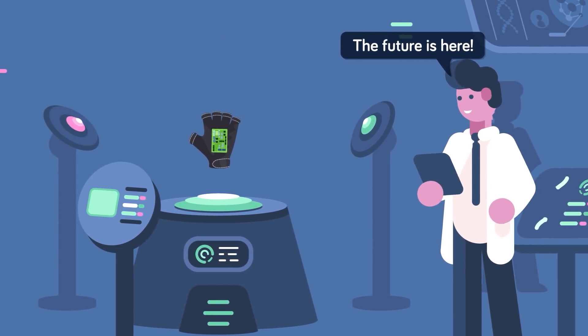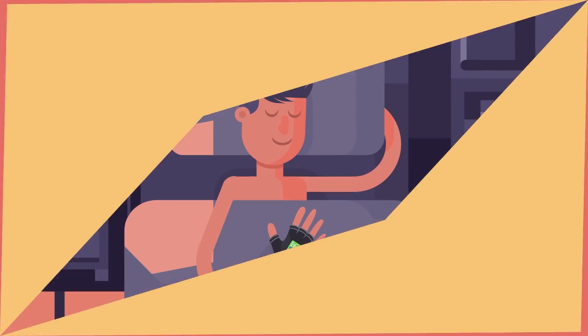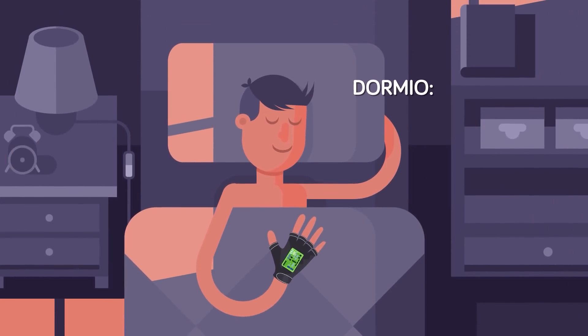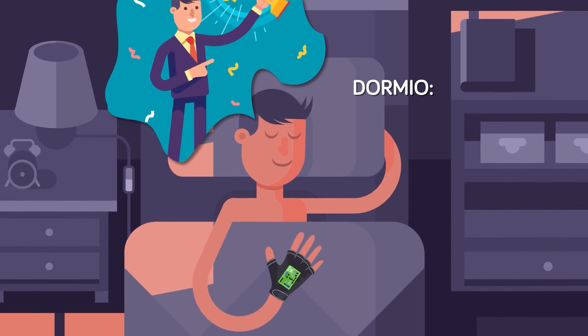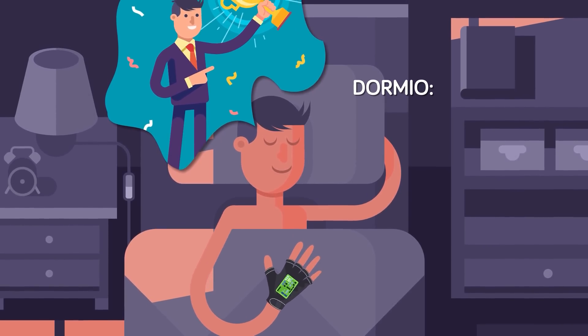And that dream salvation might come in the form of a glove. The device is called Dormio, and it looks a little like the notorious failed Nintendo gaming device called the Power Glove. It isn't designed to help your favorite plumber jump on some turtles though.